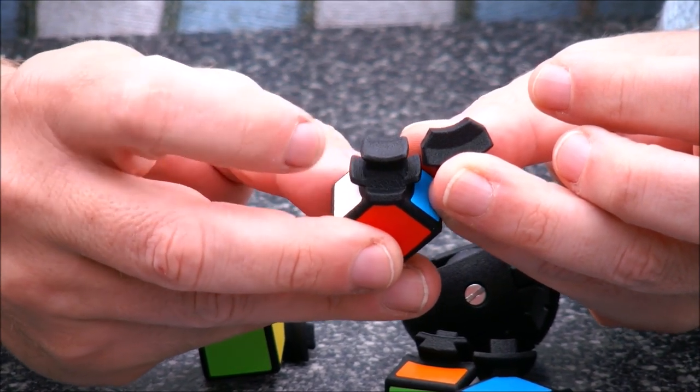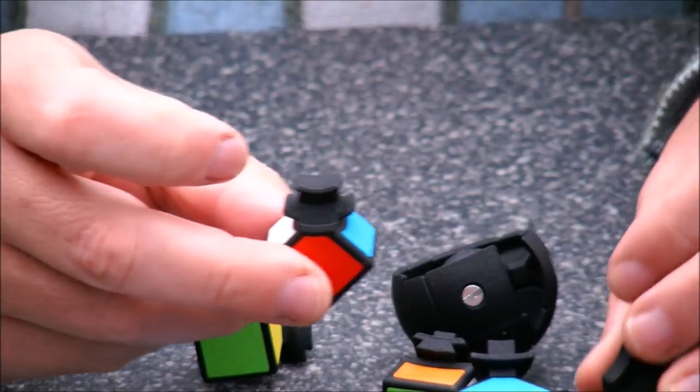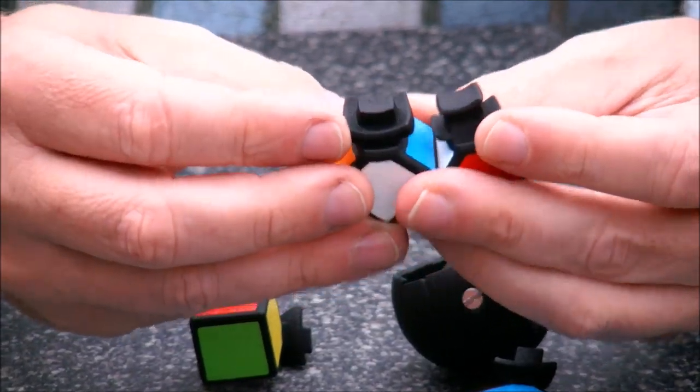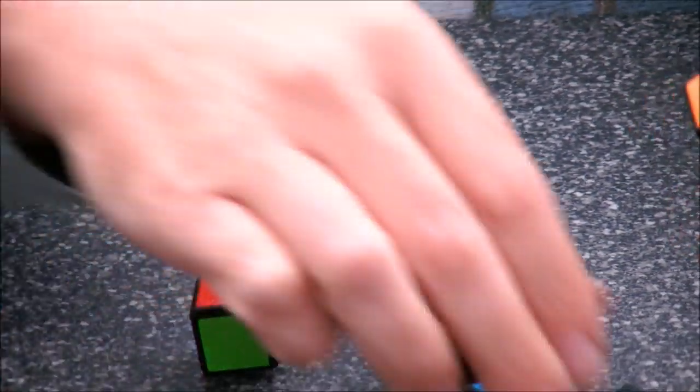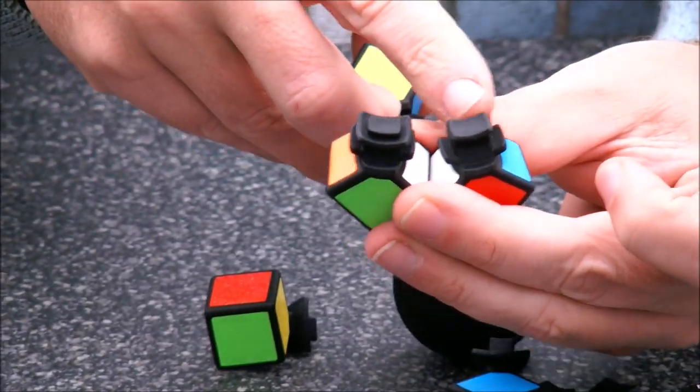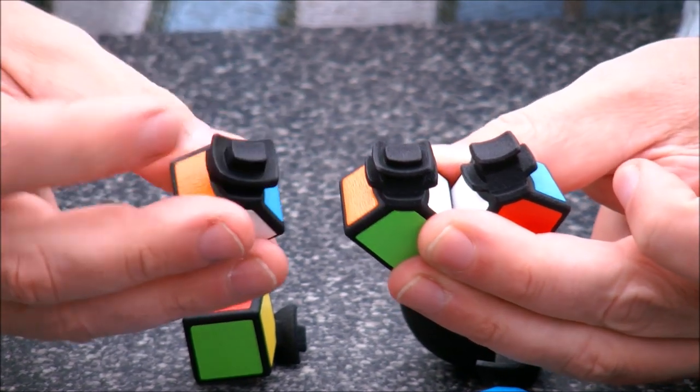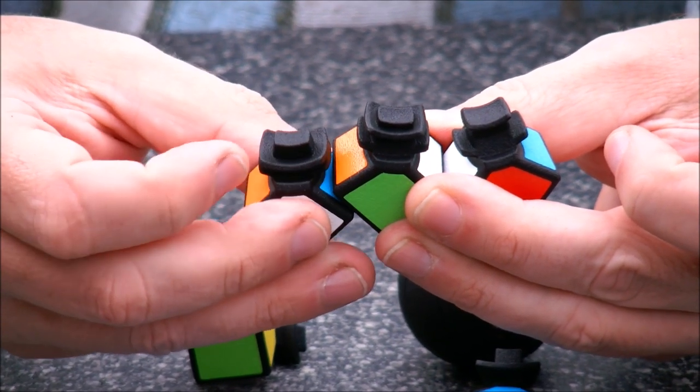This one has a little flange and some space there. And actually, the three edges, they are different. Edge number one has the extra space on top. Edge number two has the extra space here. And edge number three has it below.